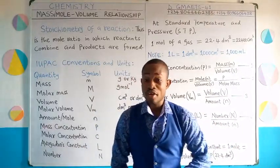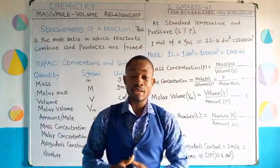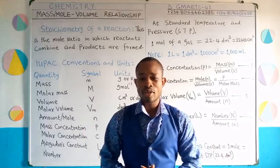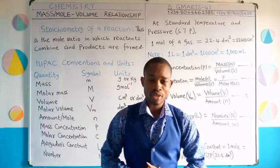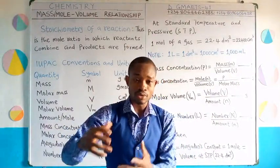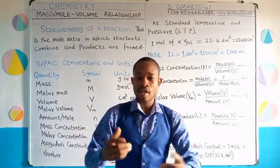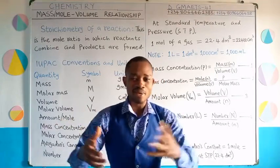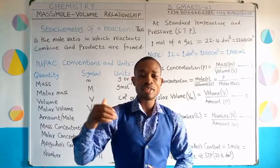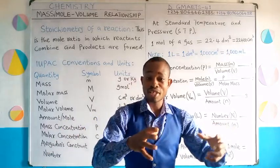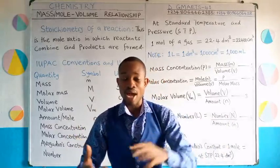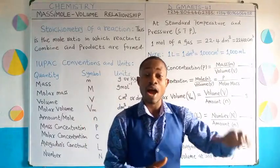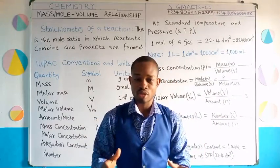What is stoichiometry of a reaction? The stoichiometry of a reaction is the mole ratio in which reactants combine and products are formed. If you recall our class on balancing of chemical equations, we introduced unknown values — variables x, y, or z — and calculated using simple equations to find their values. Those values are actually the number of moles for the given chemical reaction. The mole ratio in which reactants react and products are formed is what we refer to as stoichiometry of the reaction.